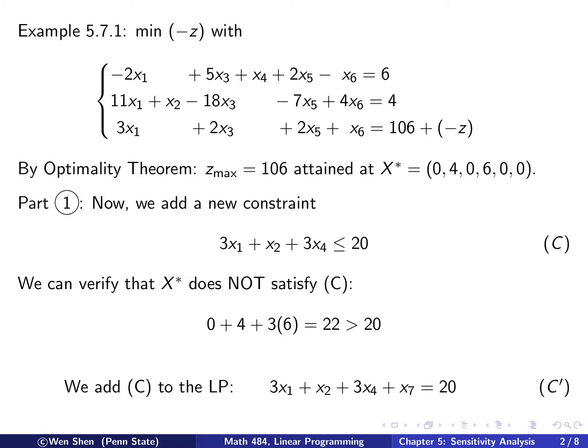So we will add the constraint, the new constraint C here, into the LP problem. And we will add a new slack variable, X7 here, and change it into equal sign, change the less than one into equal. So this is the standard form, and we'll add that in.